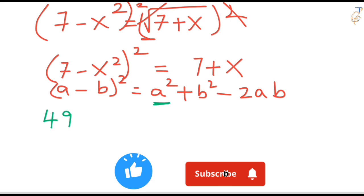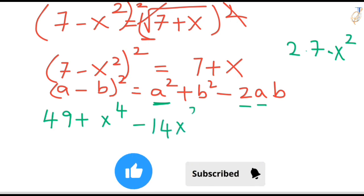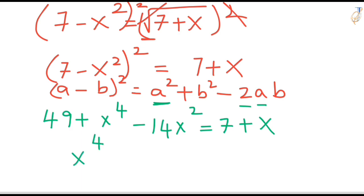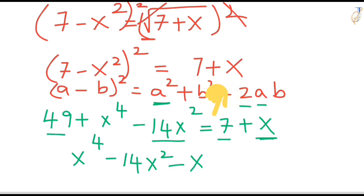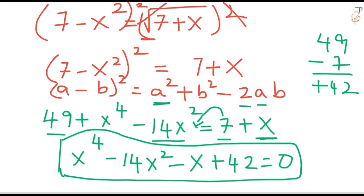The formula is a squared plus b squared minus 2ab. So: a squared gives 49, b squared is (X squared) squared which is X to the power 4, minus 2 times a times b gives 14X squared. That equals 7 plus X. Rearranging: X to the power 4 minus 14X squared minus X plus 42 equals 0. This is a biquadratic equation.